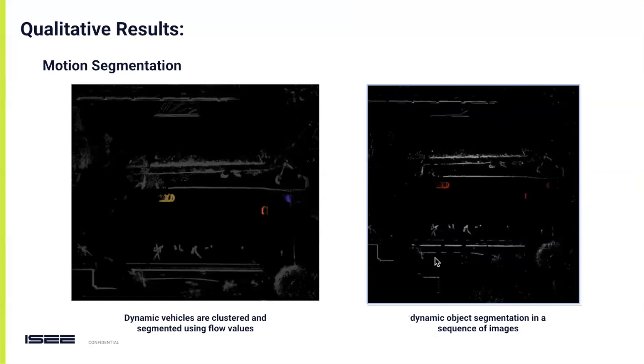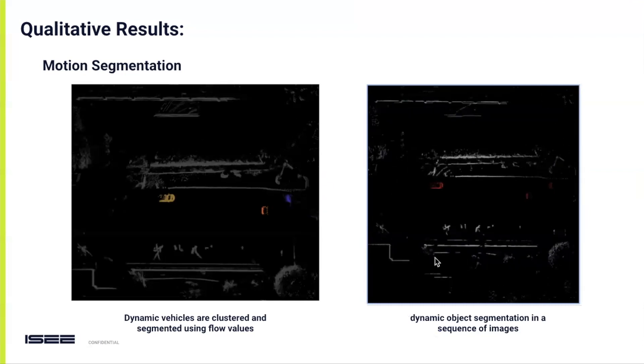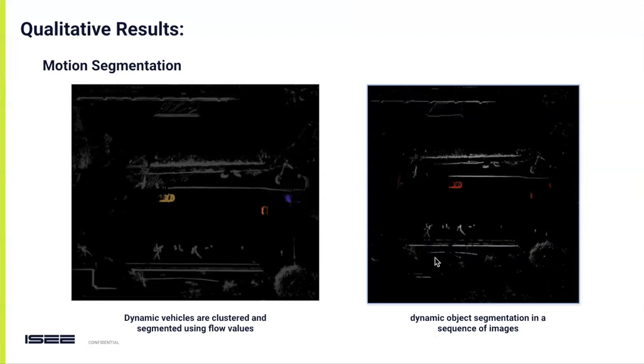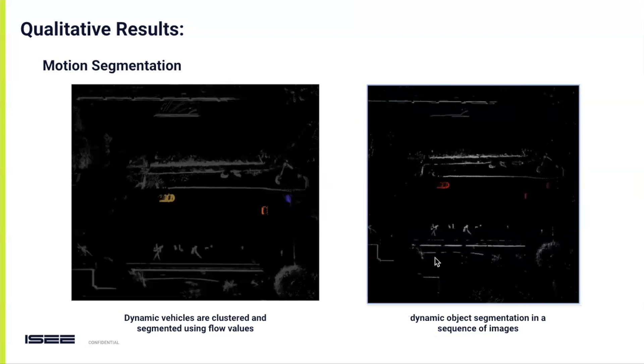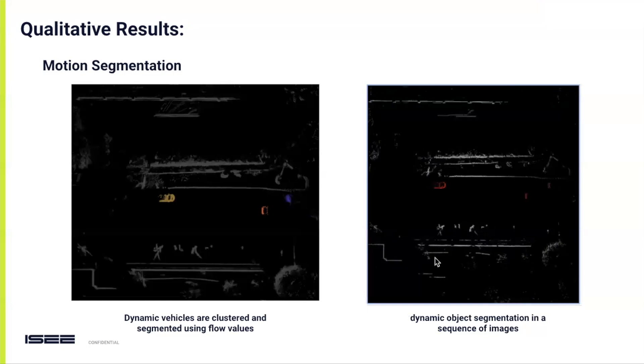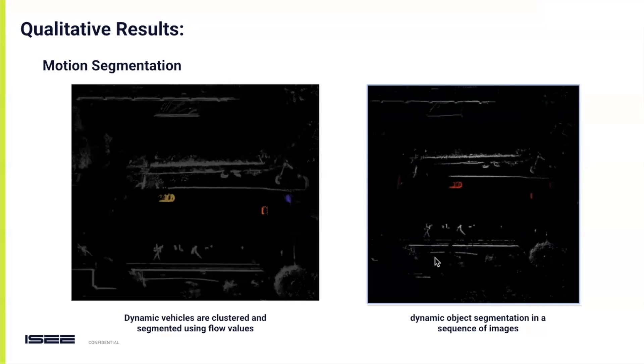We have additional visualizations demonstrating how our method accurately predicts flow vectors for each dynamic object in a scene. Furthermore, our method can be employed to densify sparse point clouds. For instance, in this scene, our method not only densified the point cloud but also successfully processed a walking pedestrian, a task that other scene flow methods struggle with. Another application of our method is in segmenting static versus dynamic points. Here, in this bird's eye view, we highlight how dynamic points are clustered and segmented. On the right, we can see a video sequence further illustrating this, with dynamic points distinctly marked in red.